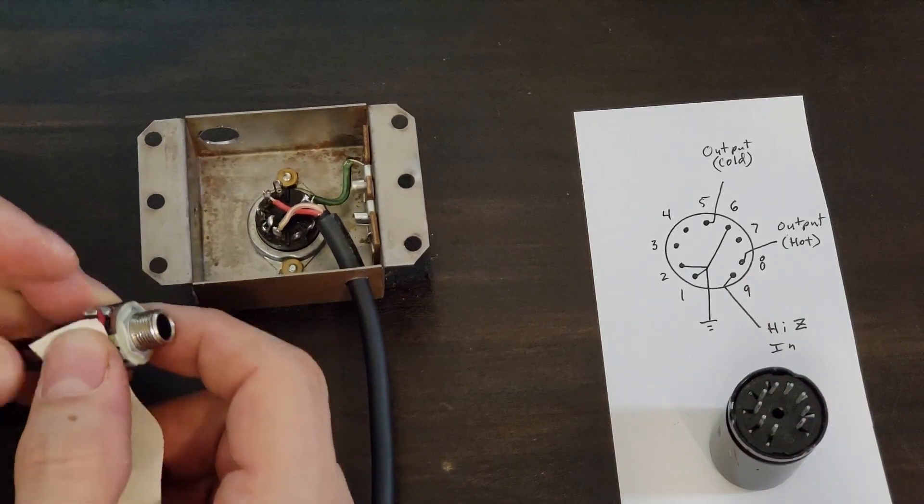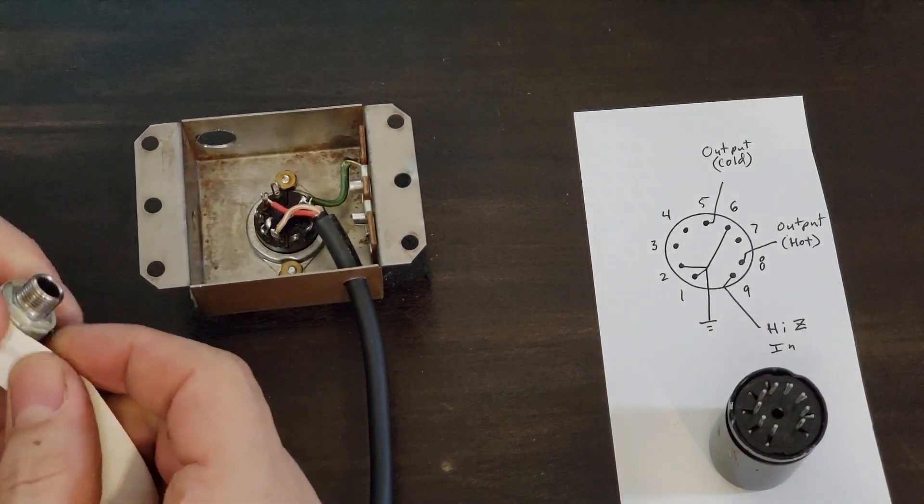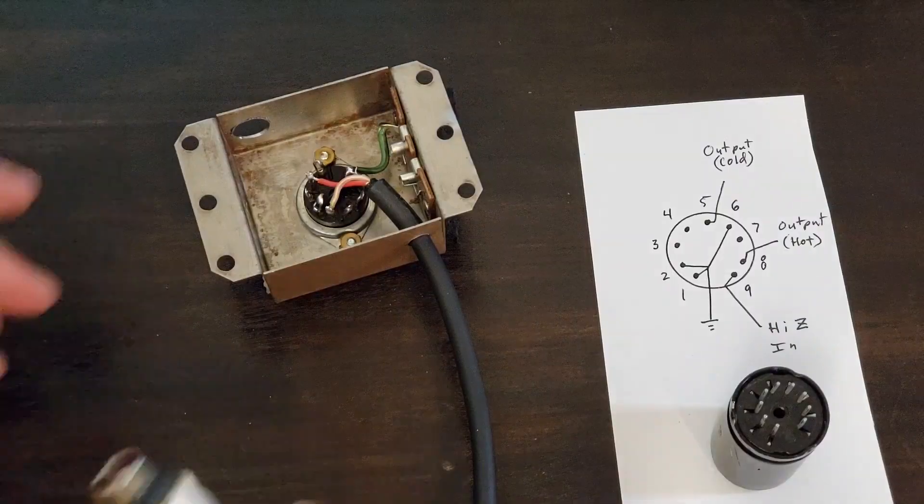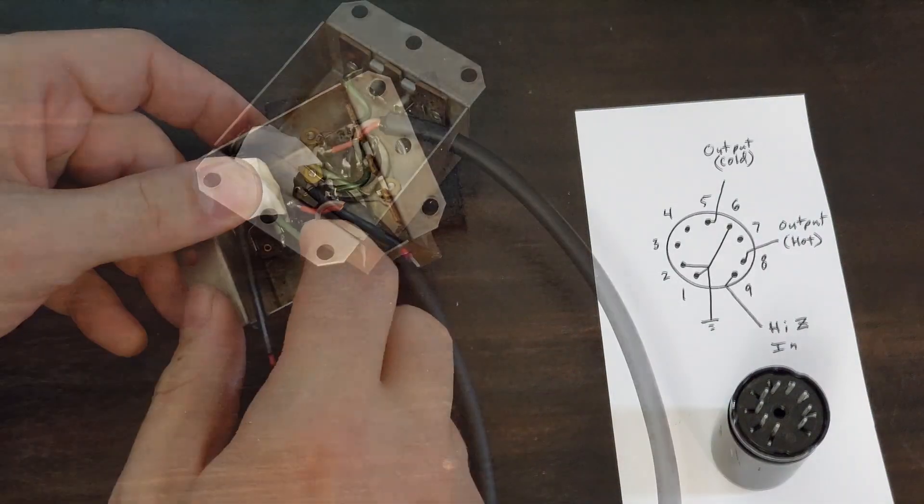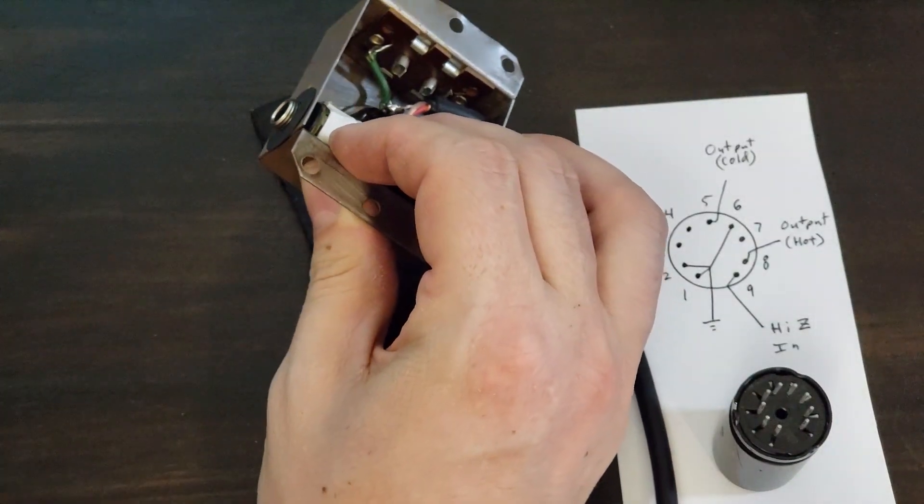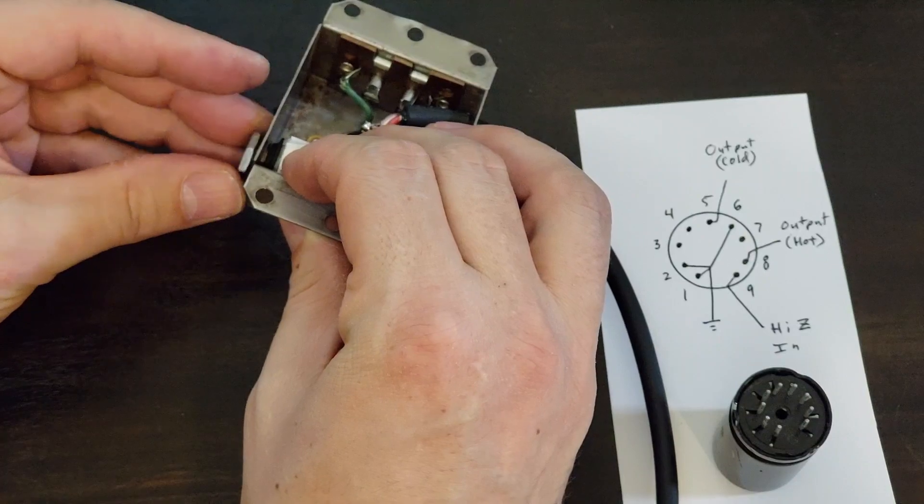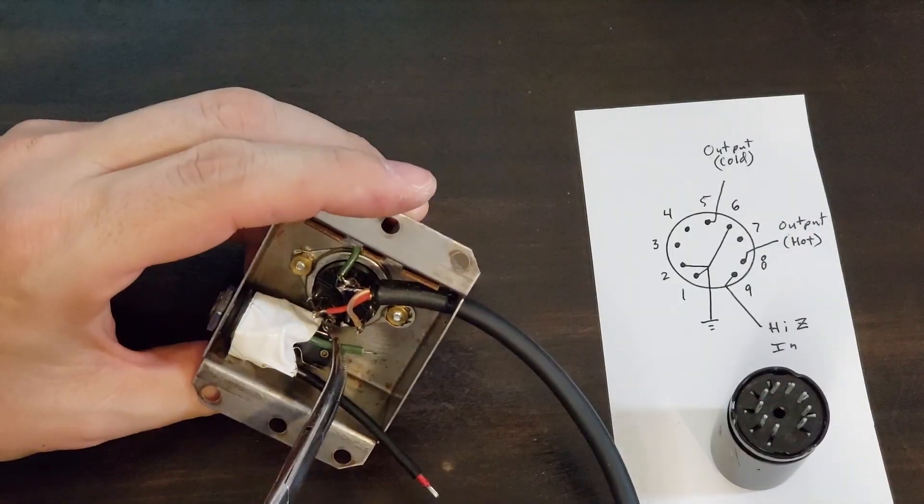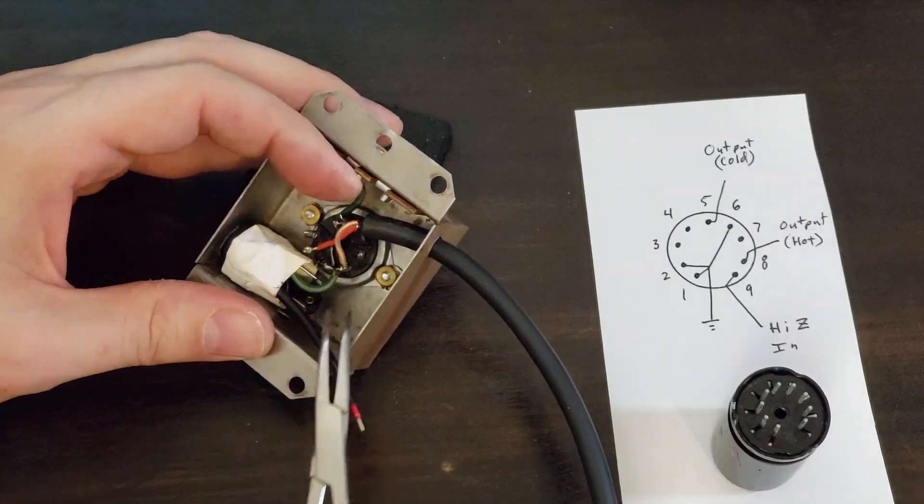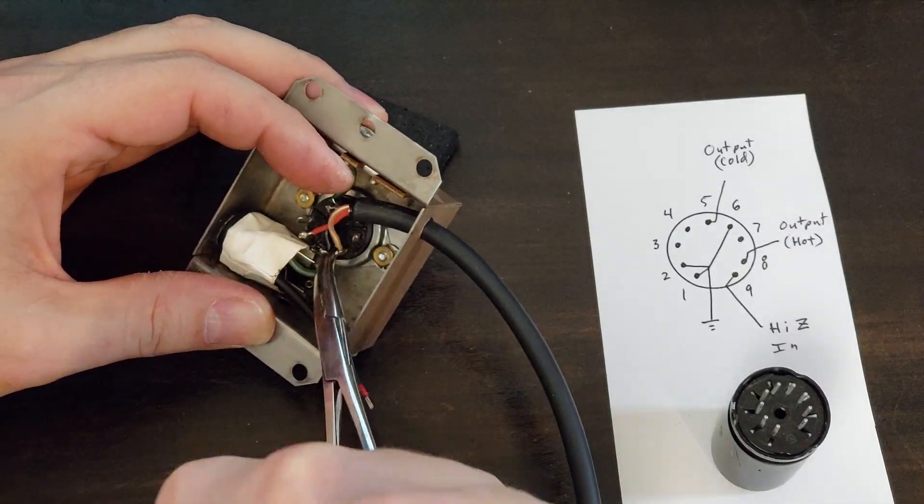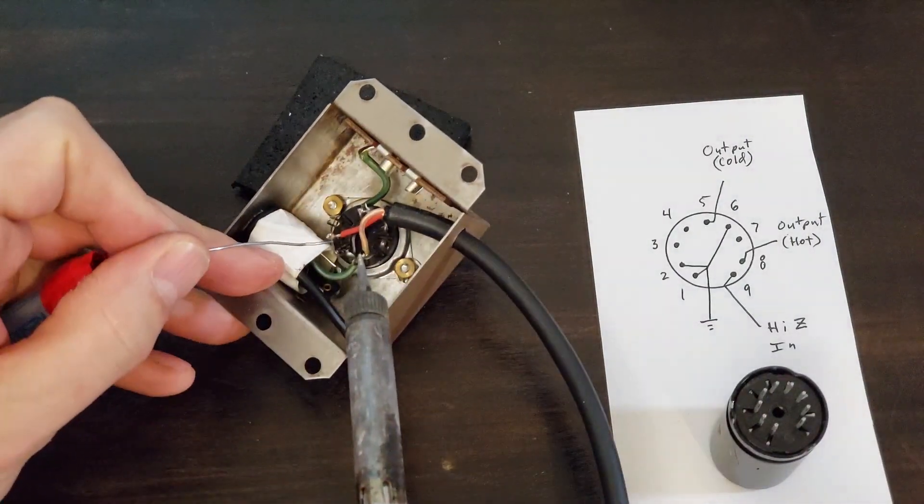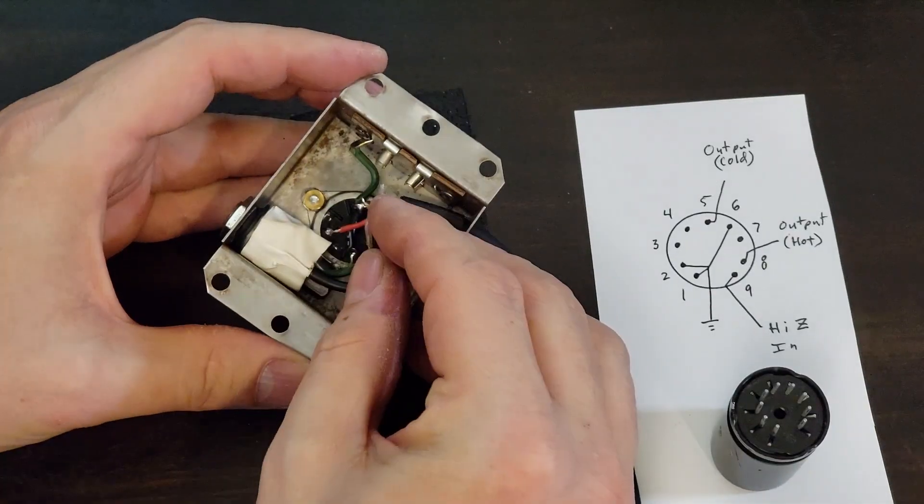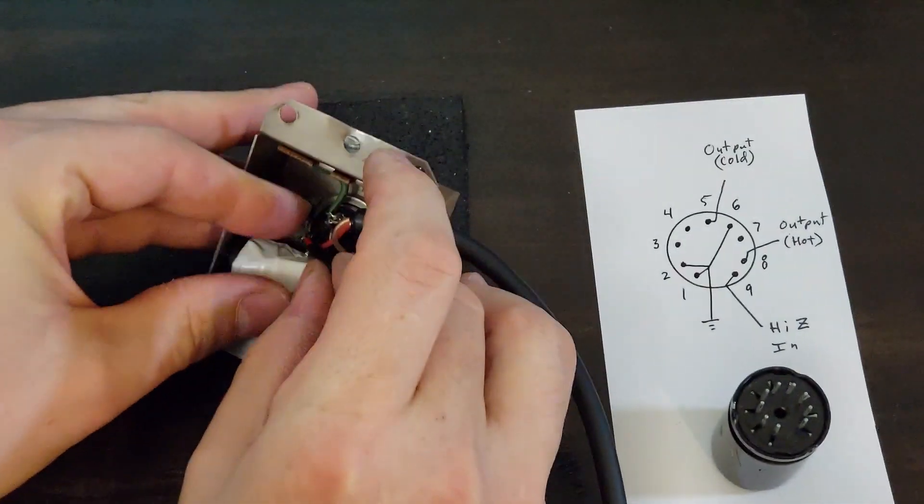And now it's time to install the quarter inch input jack. I use some vinyl tape to make sure that nothing grounds out on the chassis. I'm going to install the ground wire to pin six, solder that in. And my input wire to pin nine.